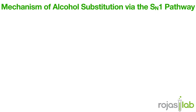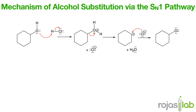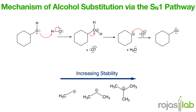Now let's talk about the SN1 reaction of alcohols. In this reaction, acid-catalyzed conversion of alcohols to alkyl halides occurs through a carbocation intermediate. The mechanism begins with protonation of the hydroxyl group to make it a better leaving group — water. Water can leave as a leaving group, generating a carbocation. Next, the nucleophile attacks the carbocation. These reactions are typically fastest for tertiary and secondary alcohols, because primary carbocations are rarely formed.